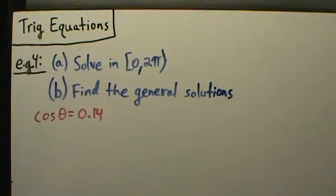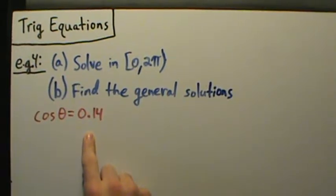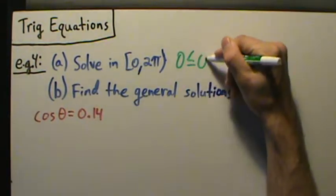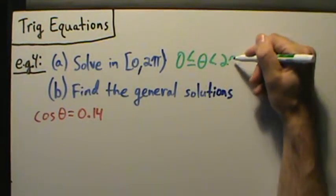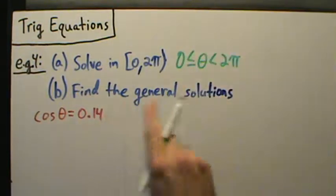Here's example four of solving trig equations. So here we have cosine of theta equals 0.14, and part a we want to solve in this interval 0 to 2 pi, and what this means is just 0 is less than or equal to theta is strictly less than 2 pi, and part b find the general solutions.